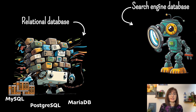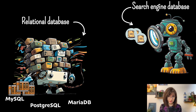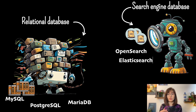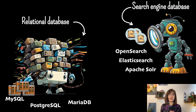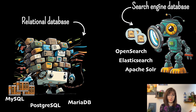Instead, it keeps the data in documents such as JSON objects. Some examples of such databases are OpenSearch, ElasticSearch, and Apache Solr, which are all actually based on Lucene. Apache Lucene itself is a full-text search library that was initially released back in 1999, still considered a golden standard for full-text search proven by more than two decades of time.